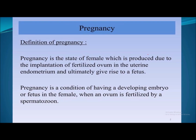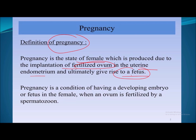Welcome to forensic extract. Today I am talking about pregnancy and its science. Pregnancy is the state of a female produced due to implantation of a fertilized ovum in the uterine endometrium, which ultimately gives rise to a fetus. Pregnancy is basically a condition of having a developing embryo or fetus in the female, after the fertilization of an ovum by a spermatozoan.